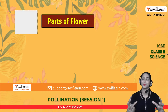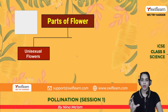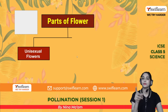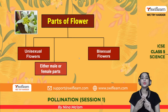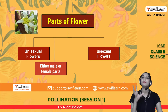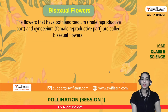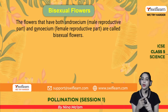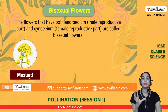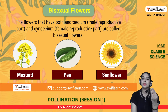We can group the whole flower into two: monosexual (or unisexual) flowers and bisexual flowers. In unisexual flowers, either the male or female reproductive part is present, but not both. When it comes to bisexual flowers — 'bi' means two — both male and female reproductive parts are present together. The example is sunflower. Bisexual flowers have both androecium and gynoecium. Examples are mustard, pea, and sunflower.